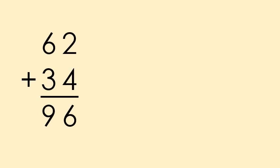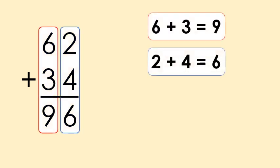If you work sums out like this, adding the tens together first and then the ones, you're actually turning one big sum into two smaller, easier sums. Since these sums use smaller, one-digit numbers, you can still use all the usual methods like number lines, your hands, and even counters.